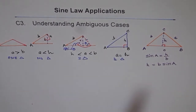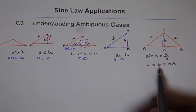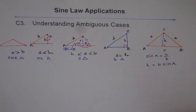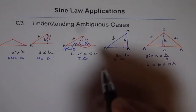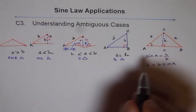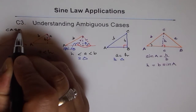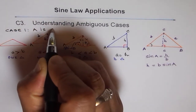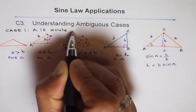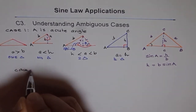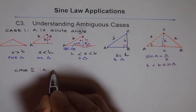In all these cases, H equals B·sin(A). Now let us move to Case 2, where angle A is an obtuse angle. These previous cases all assumed angle A to be an acute angle.